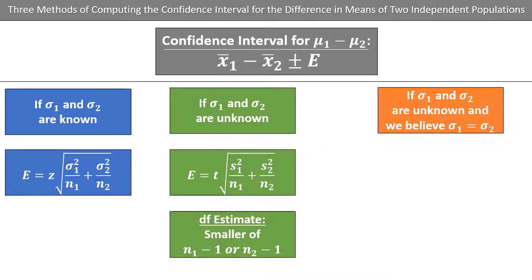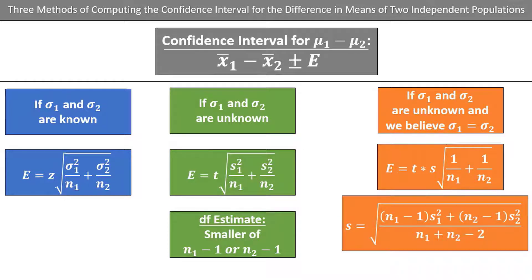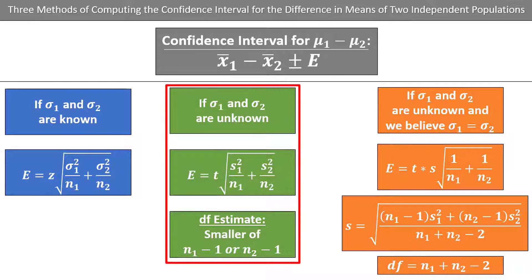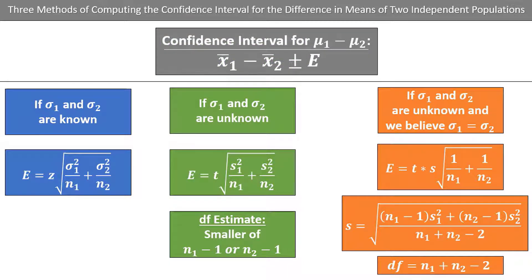If the population standard deviations are unknown but there is a good reason to think that the standard deviations are equal, the error is t times s times the square root of 1 over n1 plus 1 over n2, where s is the pooled standard deviation. The degrees of freedom are n1 plus n2 minus 2. The middle confidence interval is called the unpooled method, as we are not assuming equal standard deviations or variances. This is the most common procedure and the one we will be using. Since we are using the TI-84 calculator to calculate the confidence intervals, you don't really need to memorize these formulas.